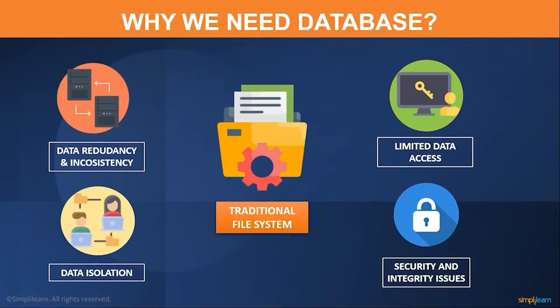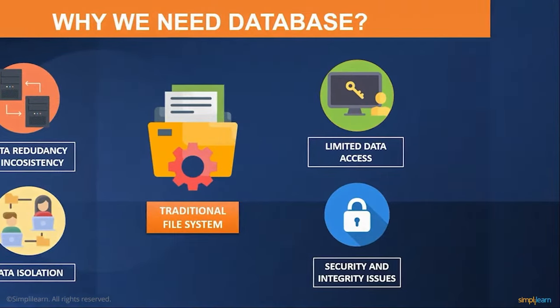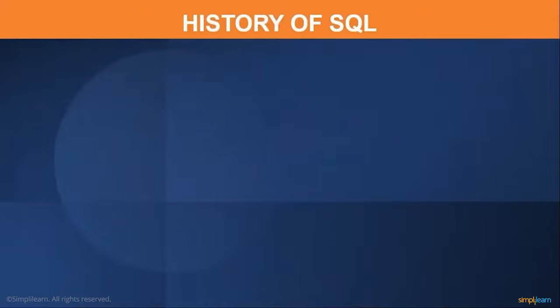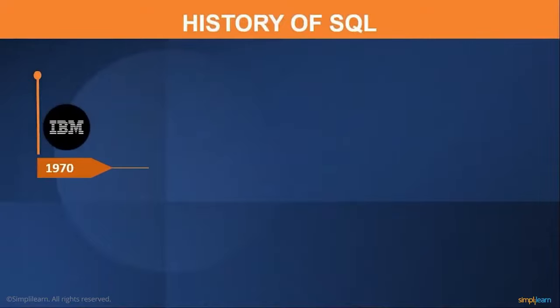In order to eliminate all these drawbacks, we use a database that is controlled by a database management system. Let us now look at the history of SQL. SQL was developed by IBM in the year 1970. Dr. Codd and Donald Chamberlain proposed a paper on usage of relational database management. They came up with SQL, which can be used to perform operations on data stored in databases. SQL was made publicly available and was accepted for the use of relational databases in the year 1974.